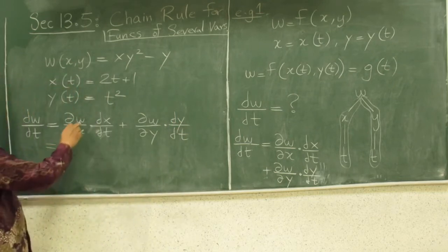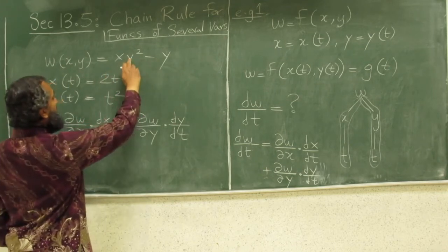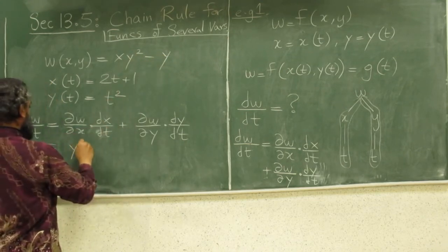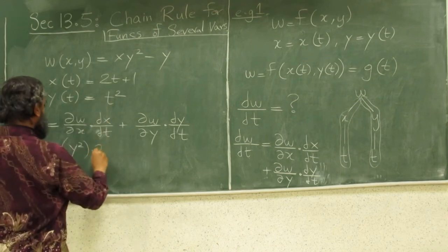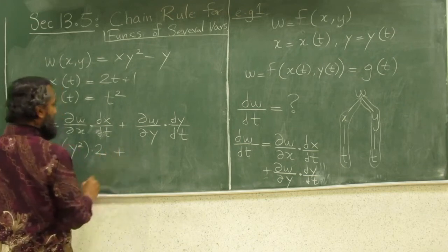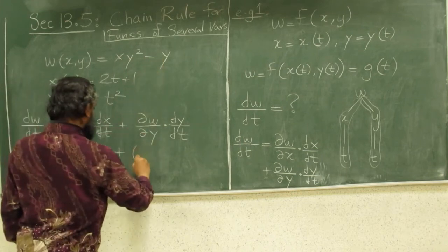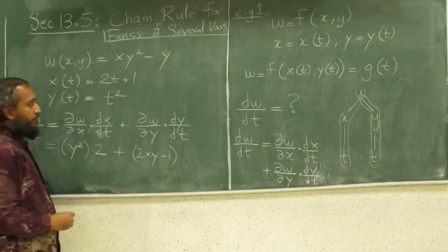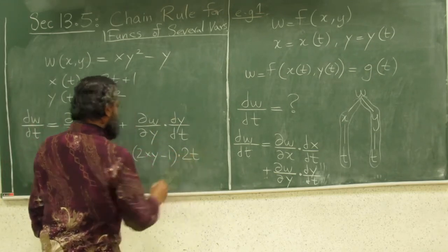How do we compute this? The rate of change of w with respect to x: taking the partial with respect to x gives y², and the other term is 0, so ∂w/∂x = y². Then dx/dt = 2. Plus ∂w/∂y = 2xy − 1, times dy/dt = 2t.